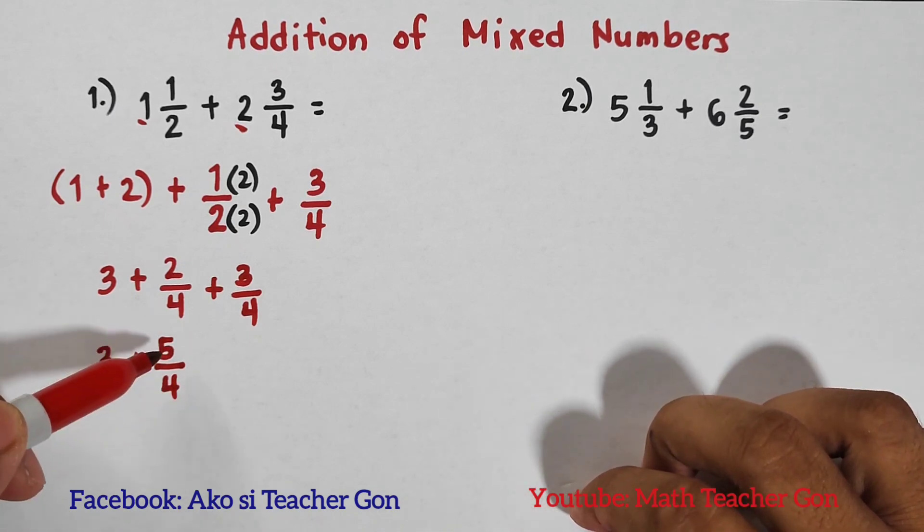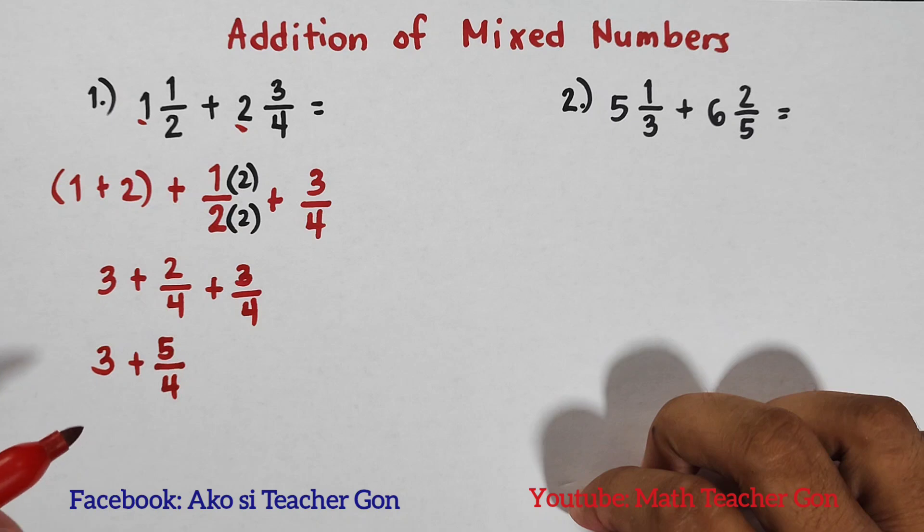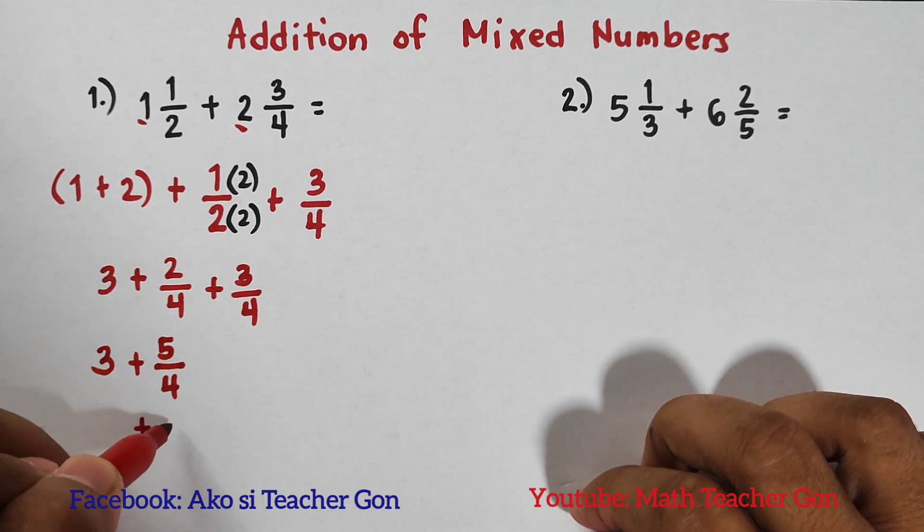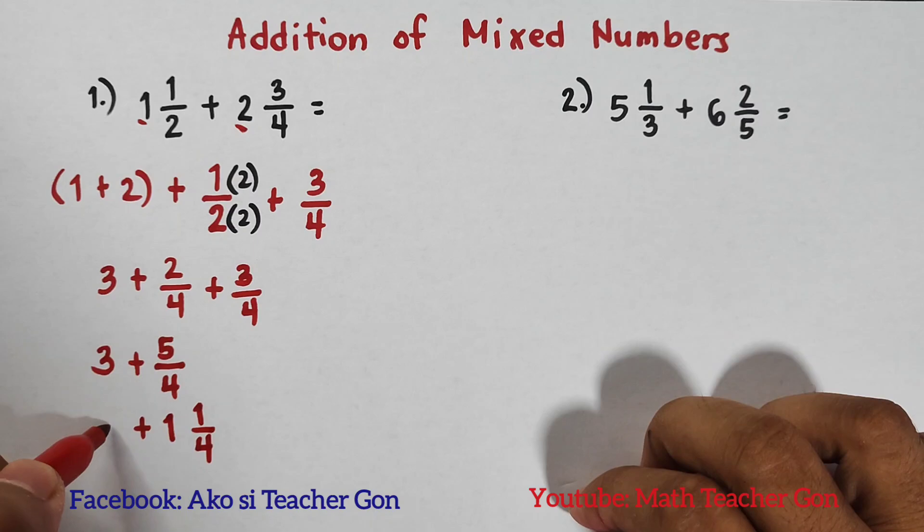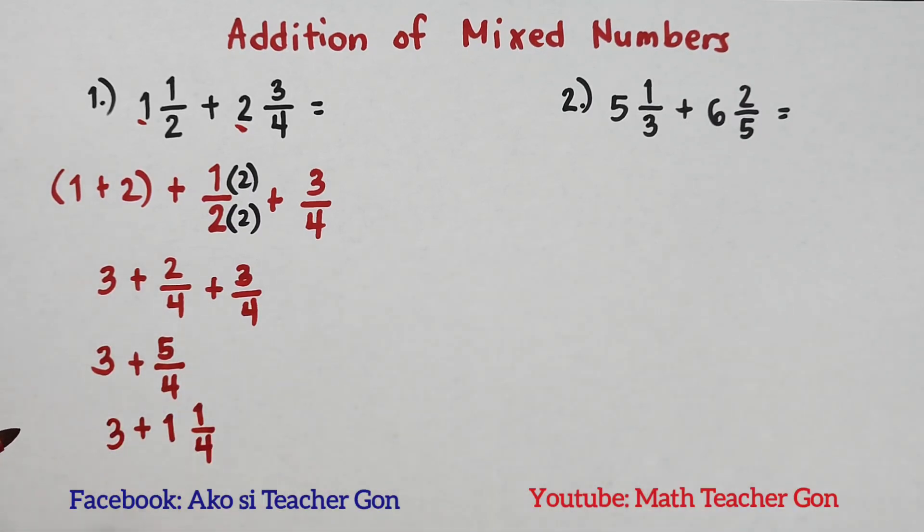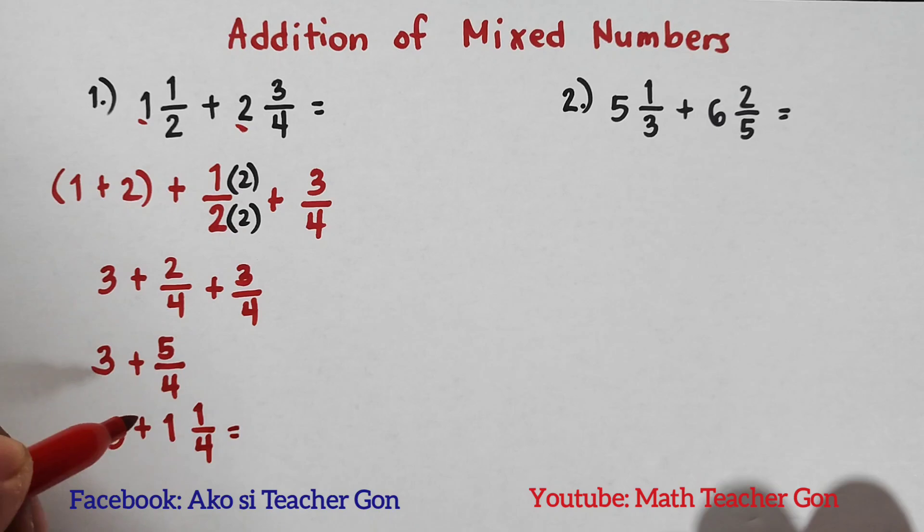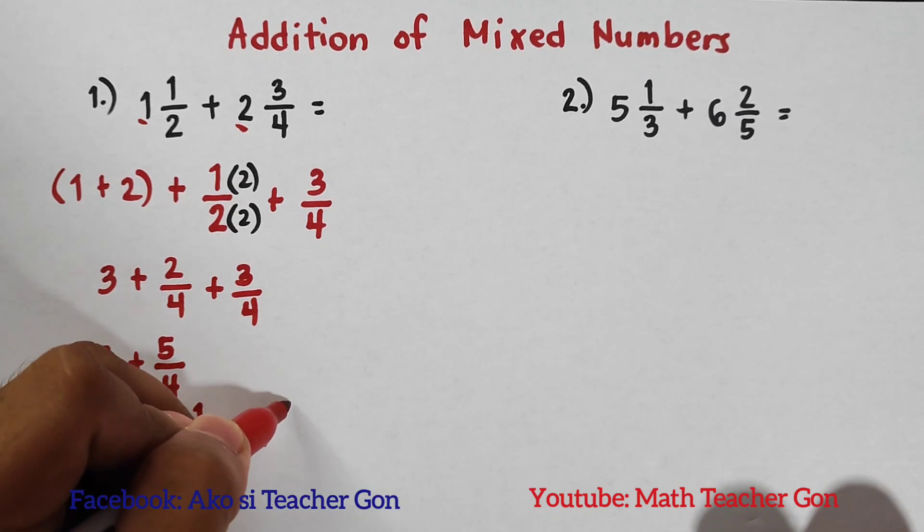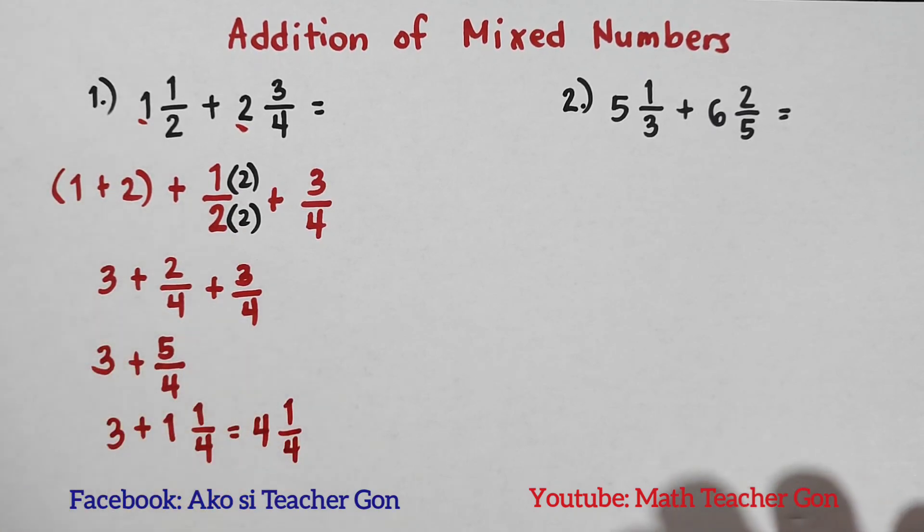Now guys, we will convert this 5/4 into a mixed number, and the equivalent mixed number of 5/4 is definitely 1¼. Copy 3. So as you can see, what we have now is 3 + 1¼, and definitely that would give you the answer 4¼. This is now the answer for item number one: 4¼.